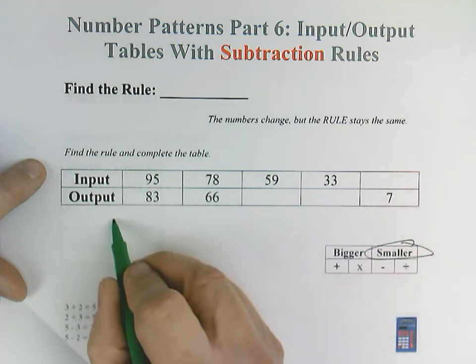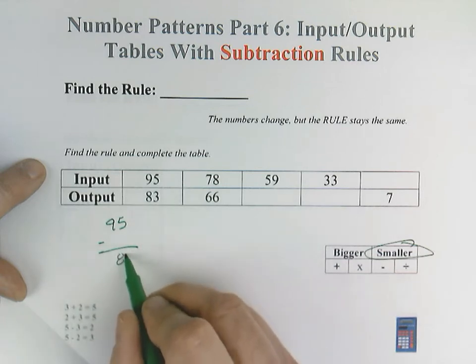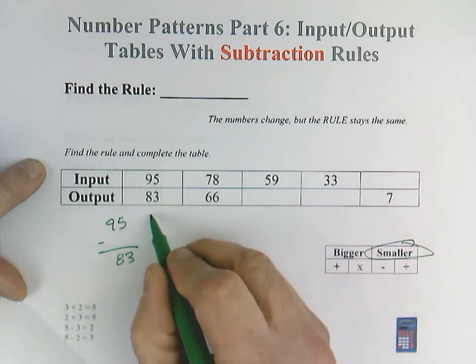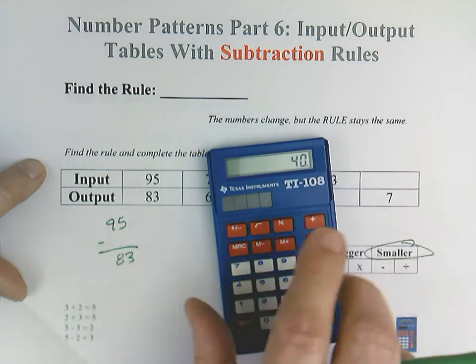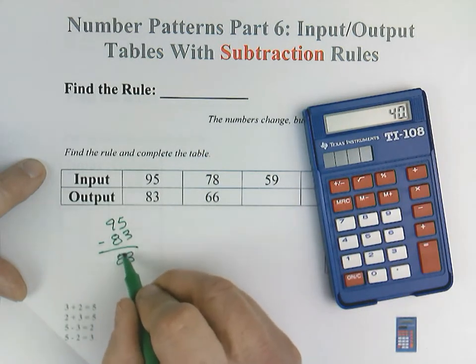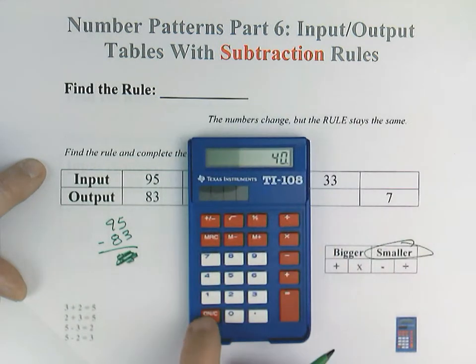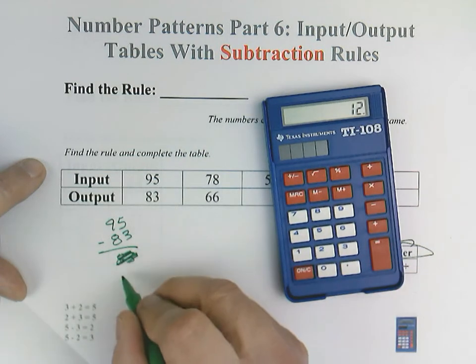You could just say 95 minus blank will equal 83. But because of our knowledge of fact families, we can just do 95 minus 83. We can just switch that, right? I'll just write my answer here.